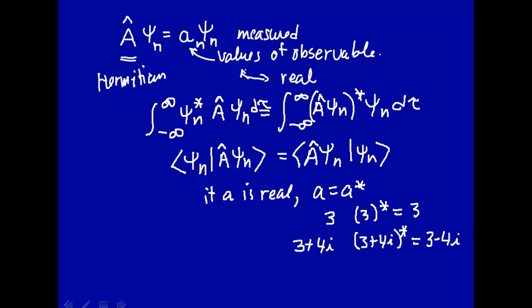If we now take the complex conjugate, we'll have 3 minus 4i. So remember, take the complex conjugate, you change i to minus i. So this number is not equal to that number if you have an imaginary number, but if you have a real number, it is. The complex conjugate of a real number is equal to that number.